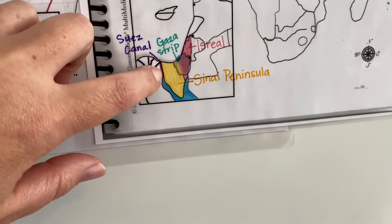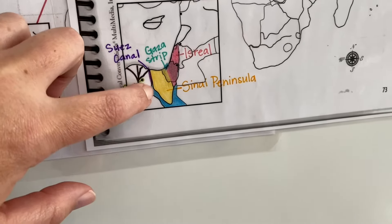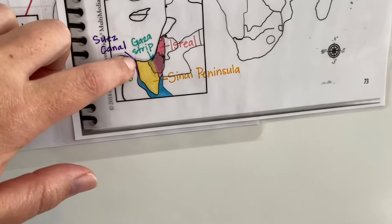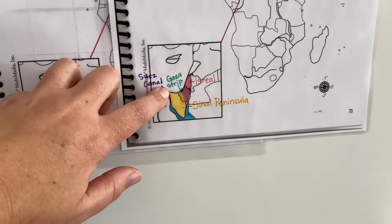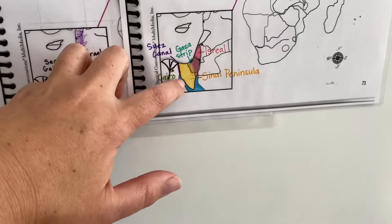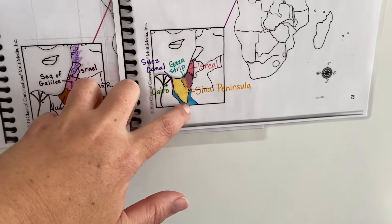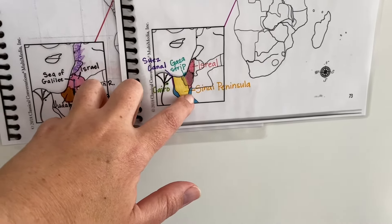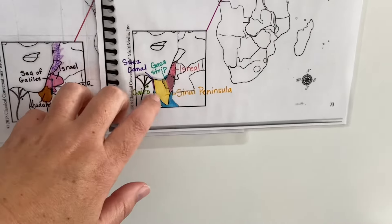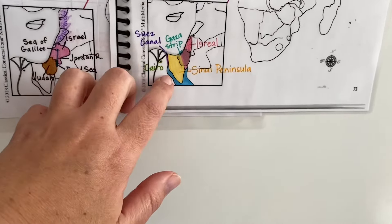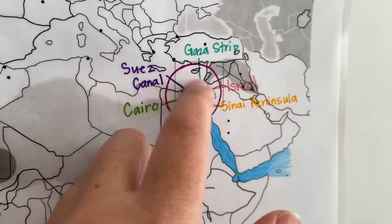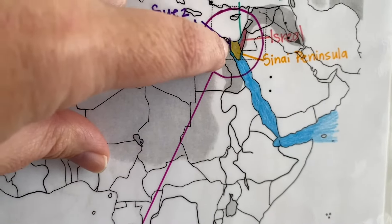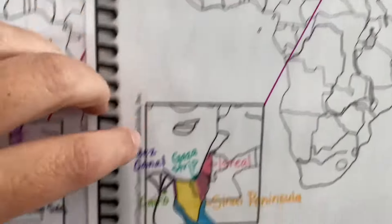The Suez Canal is this space right here — we can barely see it. It's a canal that has been dug, which is a man-made kind of river, dug to help connect this area between the Mediterranean Sea and the Red Sea. This is the Red Sea down here — if we go up here you can really see the Red Sea and the Mediterranean Sea, and right here is the Suez Canal.